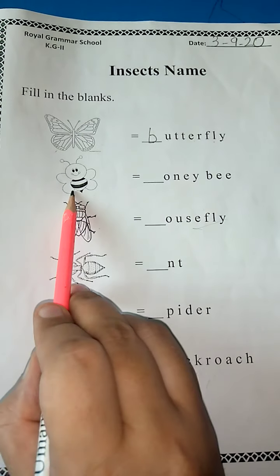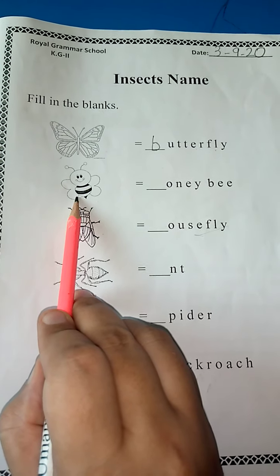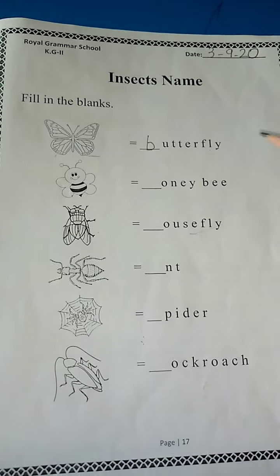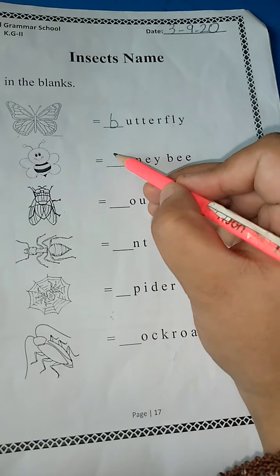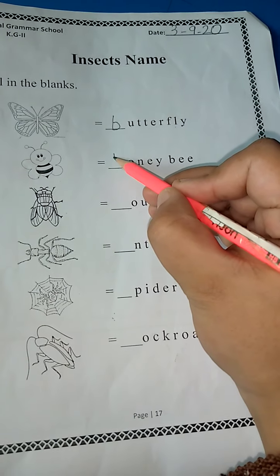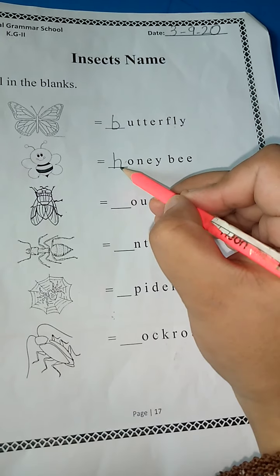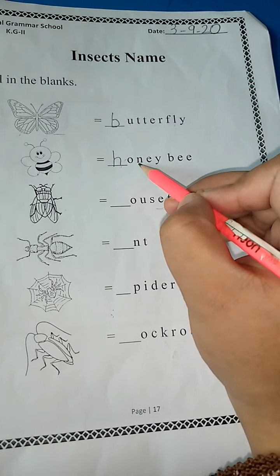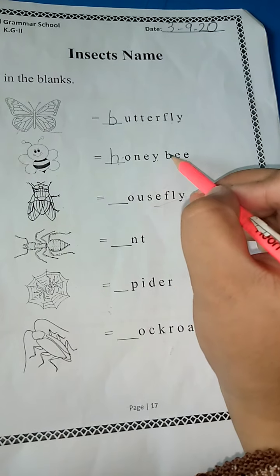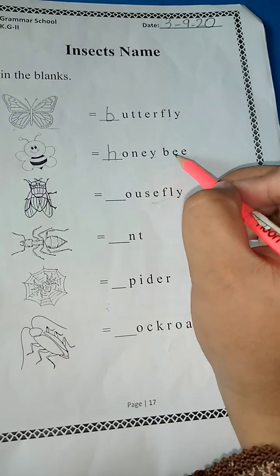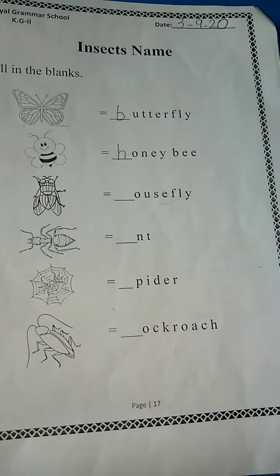Next is honeybee. Honeybee. So, what letter do we hear first? H. Write H here. H-O-N-E-Y, honeybee, double E-B. Honeybee.